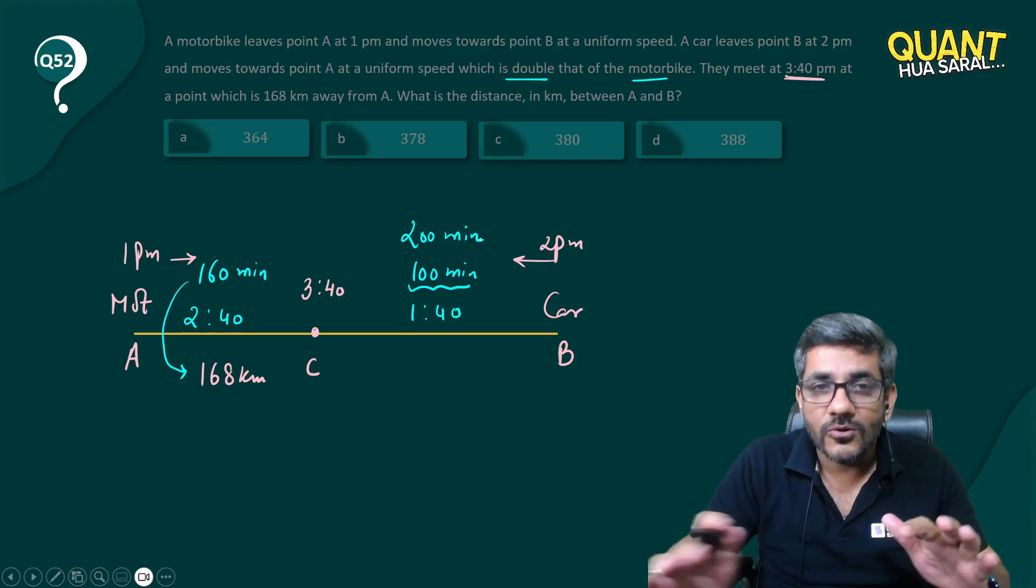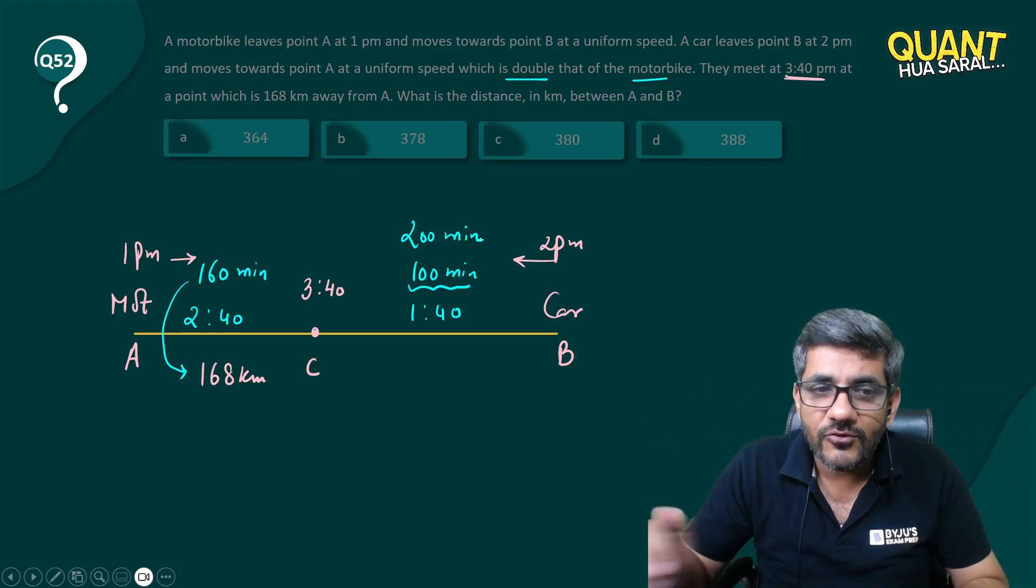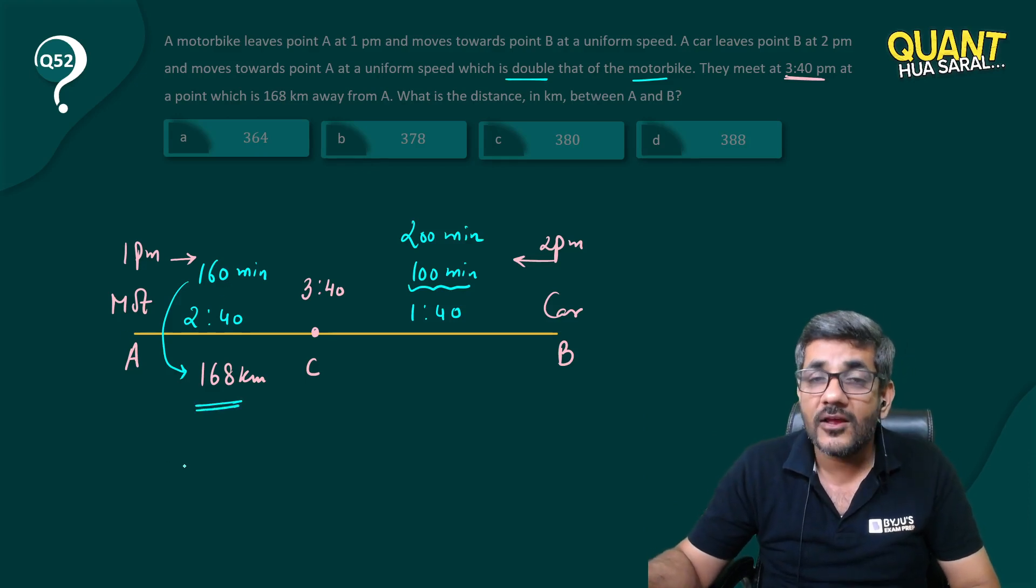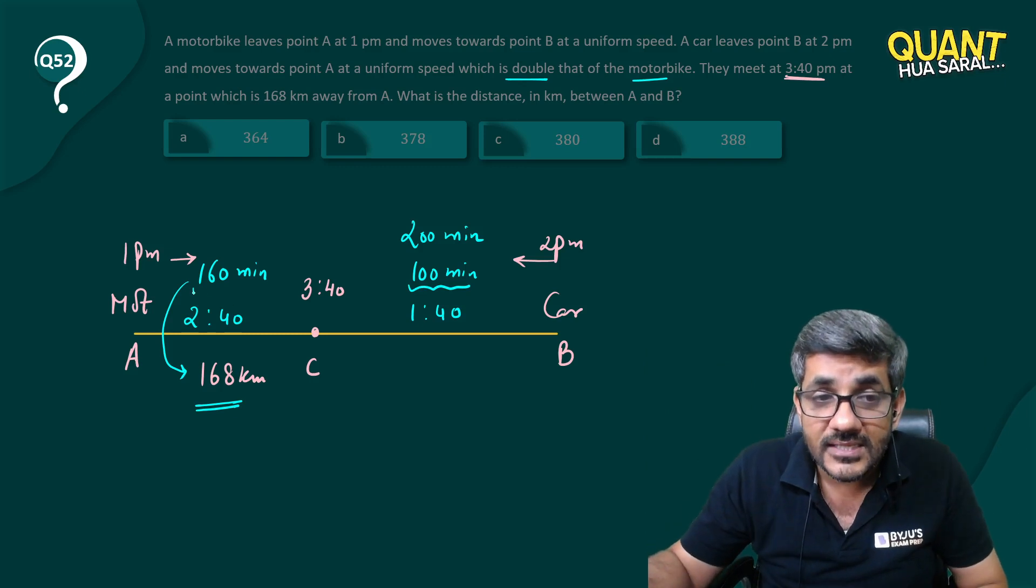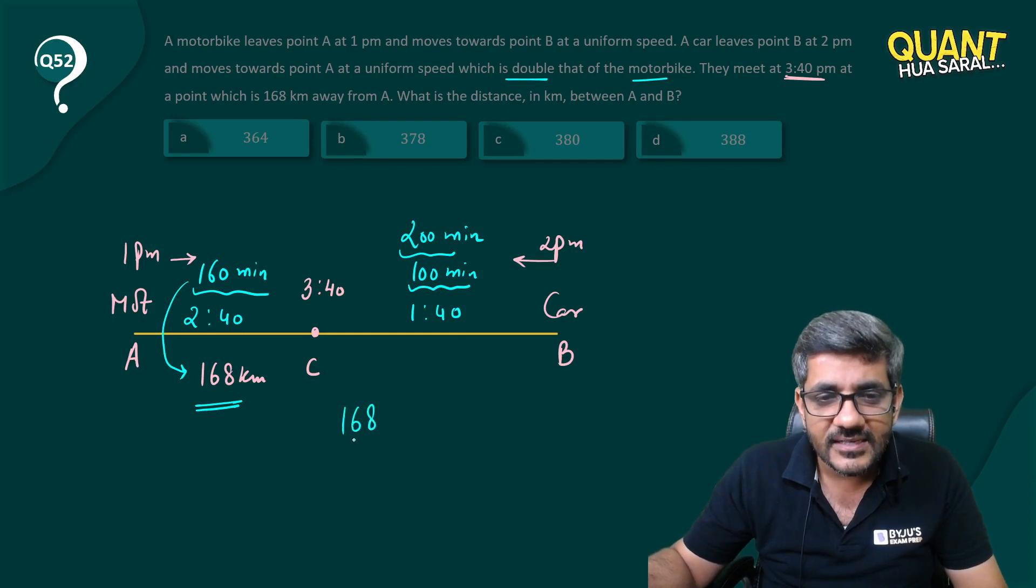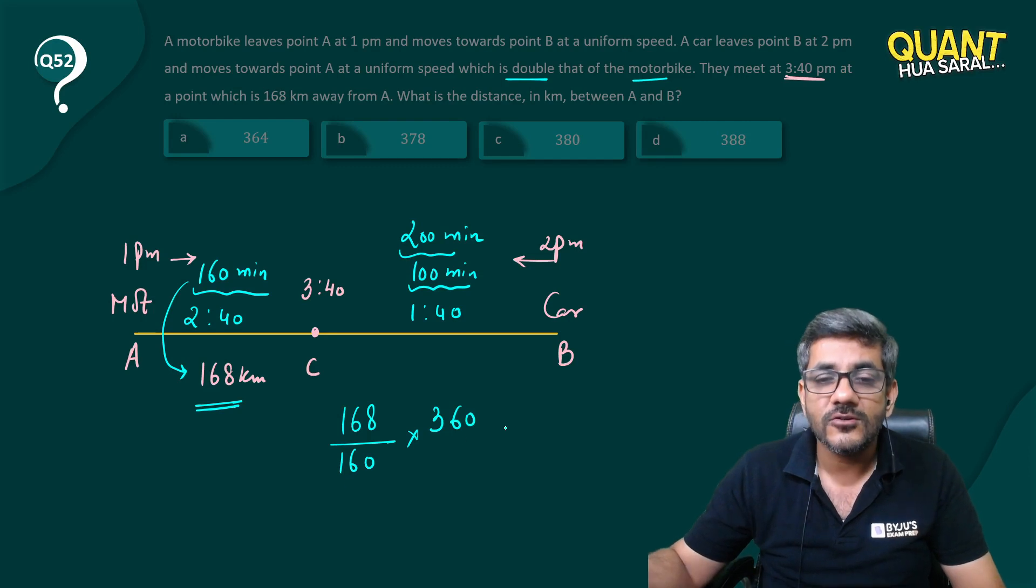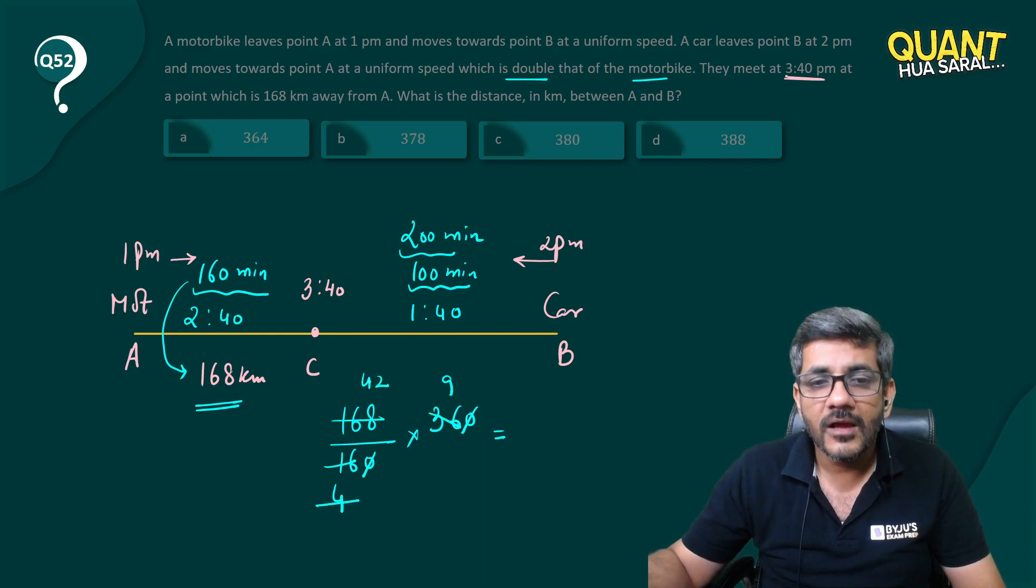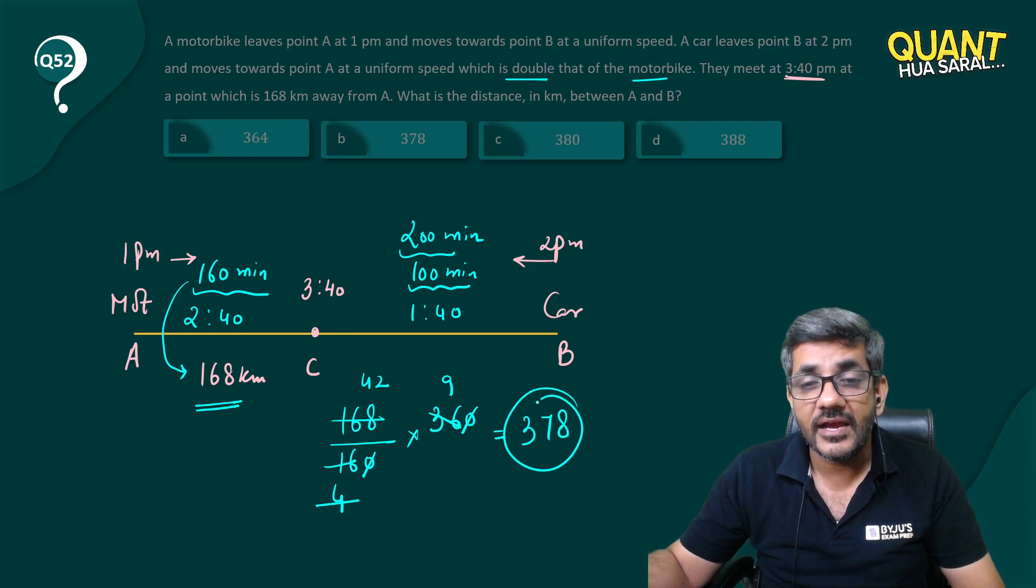So the total distance covered by the motorbike in 160 plus 200, that is 360 minutes. So in 360 minutes what is the distance traveled by the motorbike? 168 is covered in 160 minutes, so in 360 minutes the distance covered is 168 times 360 divided by 160. Zeros cancel out, four fours are 16, four nines are 36, and I have 42 here. 42 into 9 gives me 378.